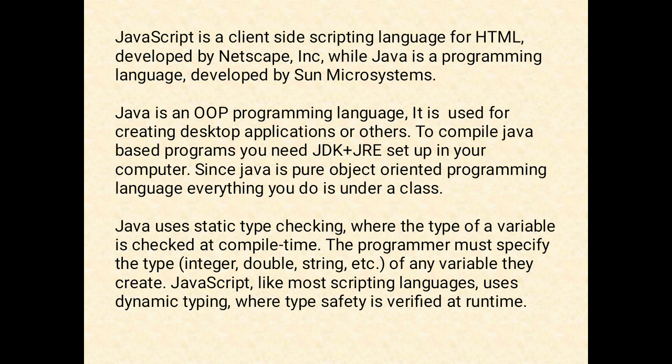Java is an object-oriented programming language. It is used for creating desktop applications or enterprise applications. To compile Java-based programs you need JDK and JRE set up on your computer. Since Java is an object-oriented programming language, everything you do is under a class.